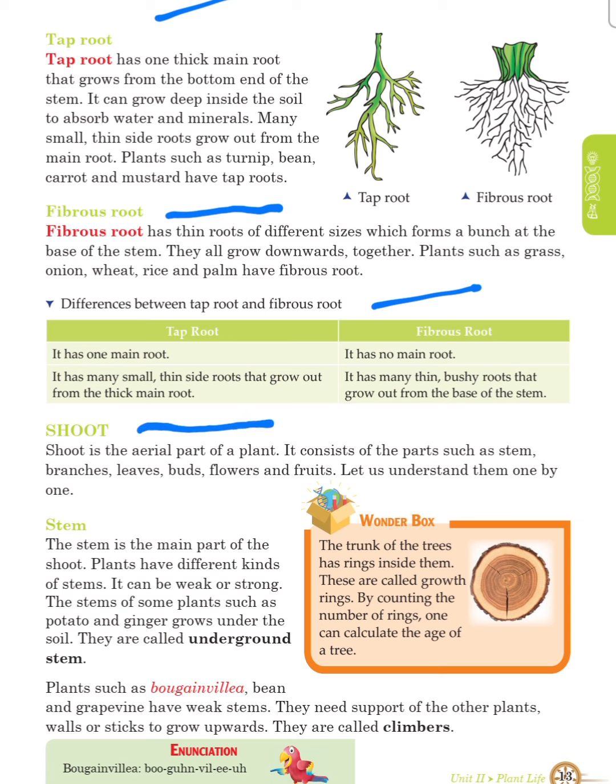What is shoot? Shoot is the aerial part of a plant. It consists of parts such as stem, branches, leaves, buds, flowers and fruits. Let us understand them one by one.